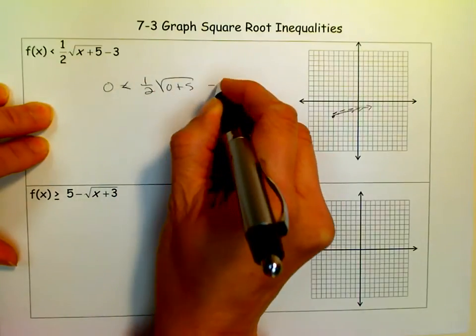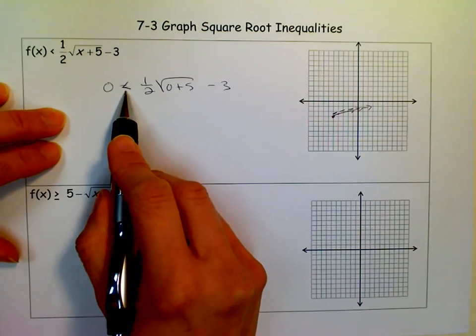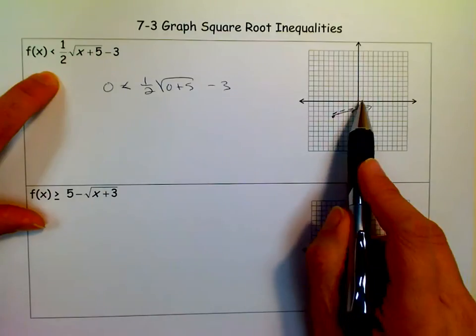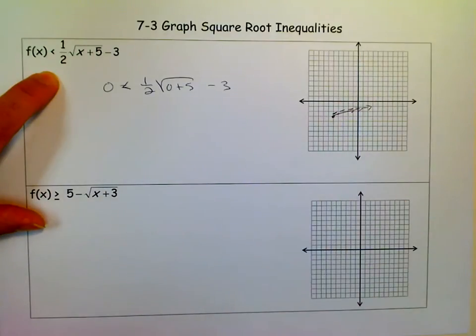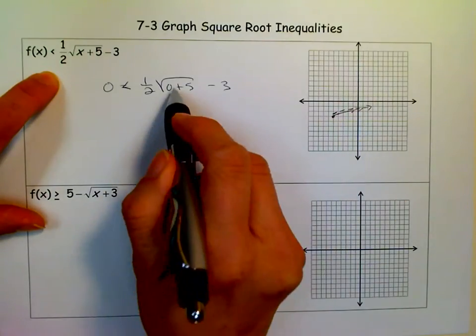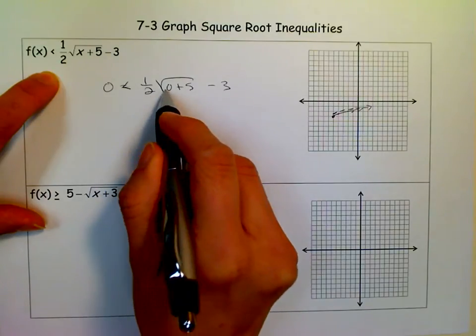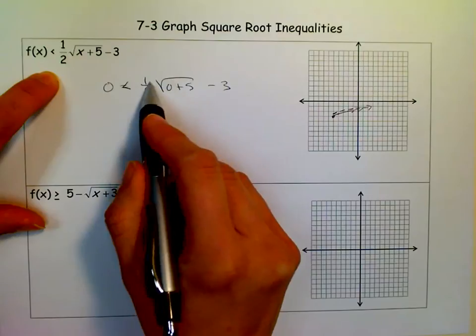If this point, when I put (0,0), makes this inequality true, then I know to shade where that point is. So the square root of five is 2.2-ish or something like that. If I divide that by two, I get one point something. It doesn't really matter what it is. If I take that and subtract three, I get a negative number.